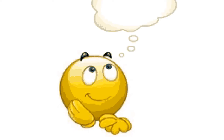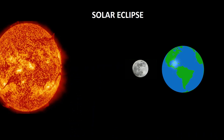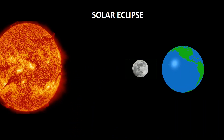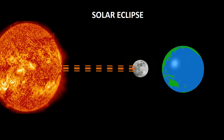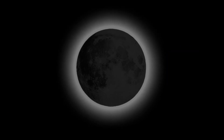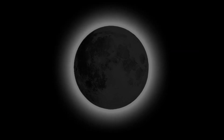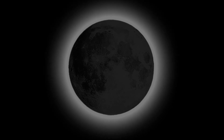Thinking Time — What is a Solar Eclipse? A Solar Eclipse is when the Moon exactly blocks the Sun's rays from hitting the Earth. A Solar Eclipse can only happen at New Moon.